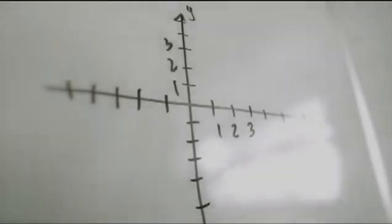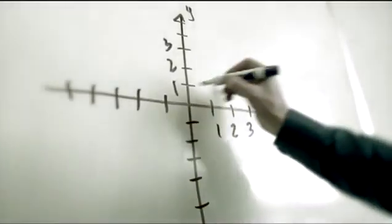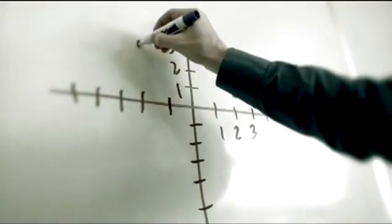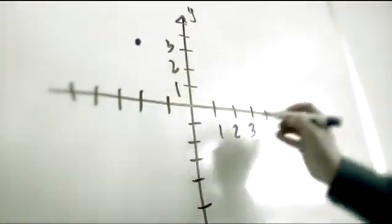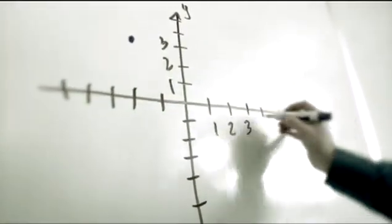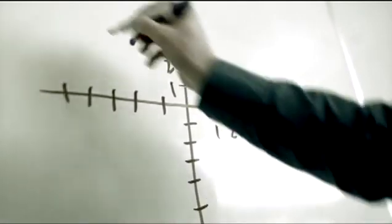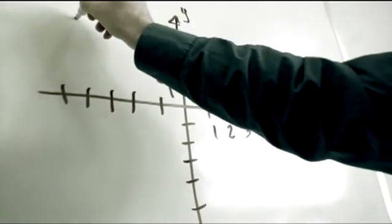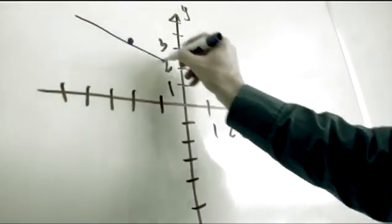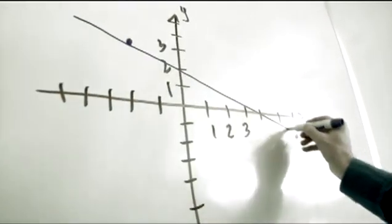Let's say we wanted our line to go through the two points: negative two comma three, and six comma negative one. We can draw a diagonal line through the dots.